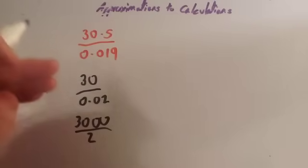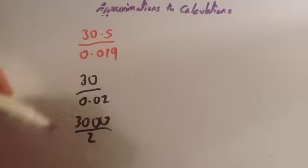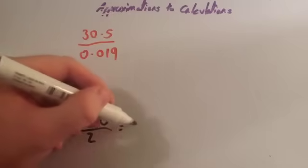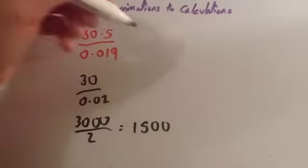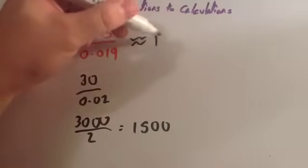Remember, watch the video on dividing by decimals to see how I've done that step. 3,000 divided by 2, well, half of 3,000 is 1,500. So, the answer is approximately 1,500.